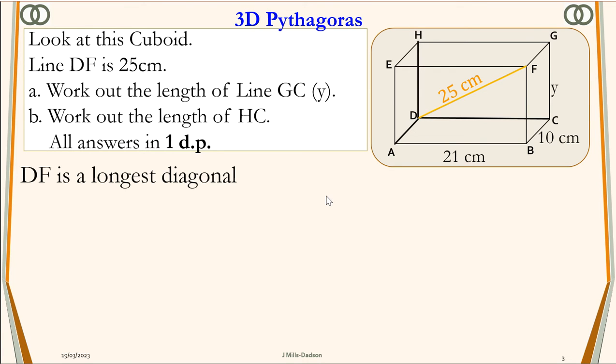Now if the longest diagonal is given, then we need to state the Pythagoras 3D equation in reverse, that is the subtraction rule. Which means y squared should be equal to 25 squared minus 21 squared minus 10 squared.